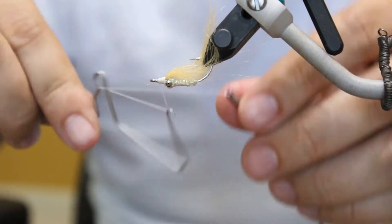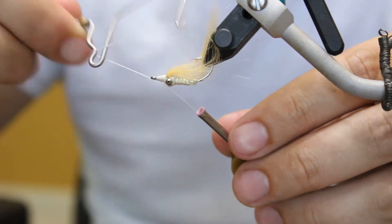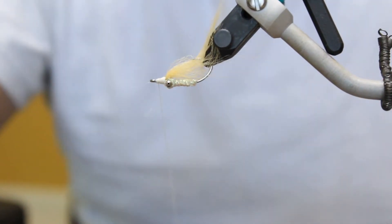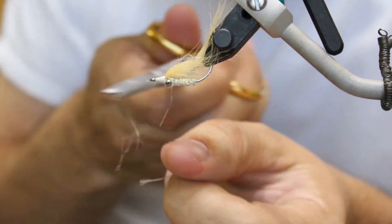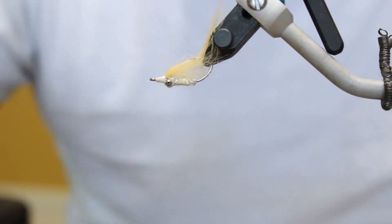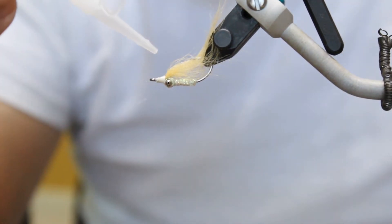So I'm going to whip finish this guy. I'm an over whip finisher. You don't have to do four wraps. I definitely feel like whip finishing helps. Let's see if I can get just a little bit of zap-a-gap on the top of the hook.